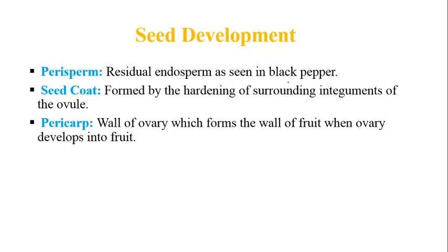Sometimes a residual part of the nucellus is left inside the seed — this is called perisperm, as seen in black pepper. The seed coat is formed by the hardening of the surrounding integuments, protecting the seeds. The integuments, which we studied as surrounding the embryo sac, harden to form the seed coat.